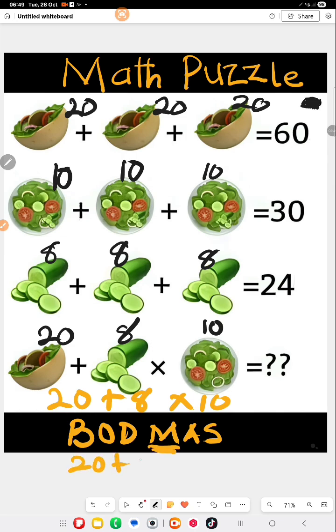Meaning 20 plus 8 times 10, we consider this first. 8 times 10 gives us 80 plus 20. The final answer is 100. If this helped, please like, subscribe, and share. Thank you.